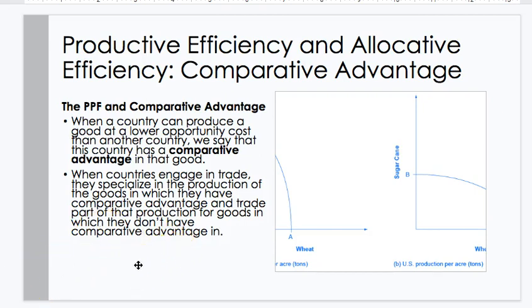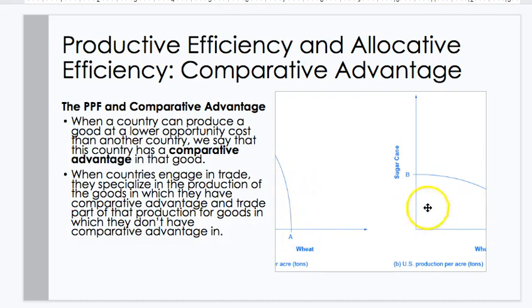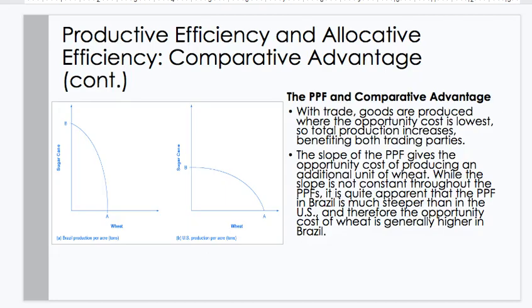When a country can produce a good at a lower opportunity cost than another country, we say that country has a comparative advantage in that good. When countries engage in trade, they specialize in the production of goods in which they have comparative advantage and trade part of that production for goods in which they don't. There are two different PPFs here with two different opportunity costs, and therefore there will be an advantage from trade. Goods are produced where the opportunity cost is lowest, so total production increases, benefiting both trading parties. The slope of the PPF gives the opportunity cost of producing an additional unit — for example, wheat — and the PPF in Brazil is much deeper than in the U.S., meaning the opportunity cost of wheat is generally higher in Brazil.